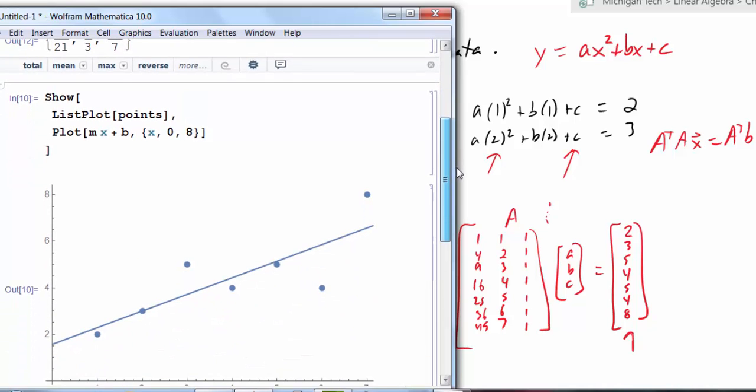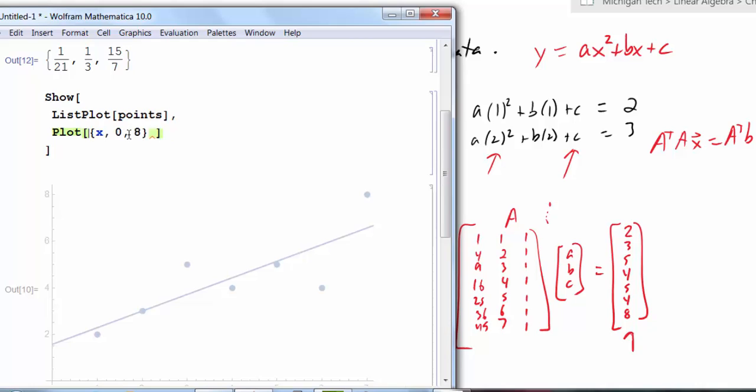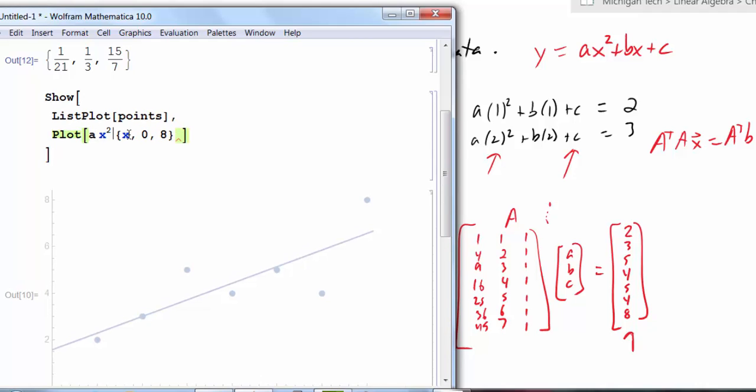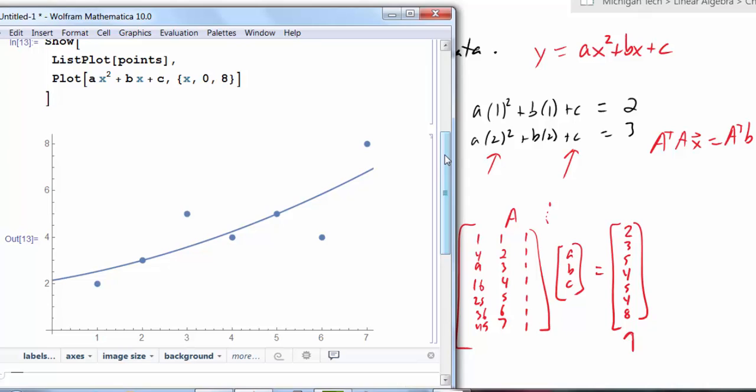And now I have my same points. But now instead of looking at mx plus b, I want to look at ax squared plus bx plus c. And that should be my quadratic. Now let's take a look. And sure enough I have the best quadratic function that fits this data.